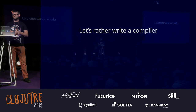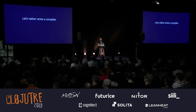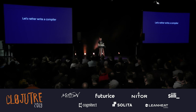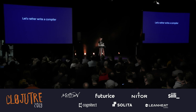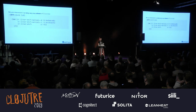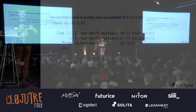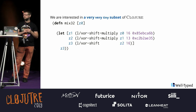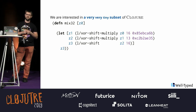So let's do it once and see that it works well, so we don't make any mistakes by manually tweaking our code. What we're interested in is a very, very tiny subset of Clojure. We have only numbers and a few primitive operations: XOR, shift, and multiply, essentially.